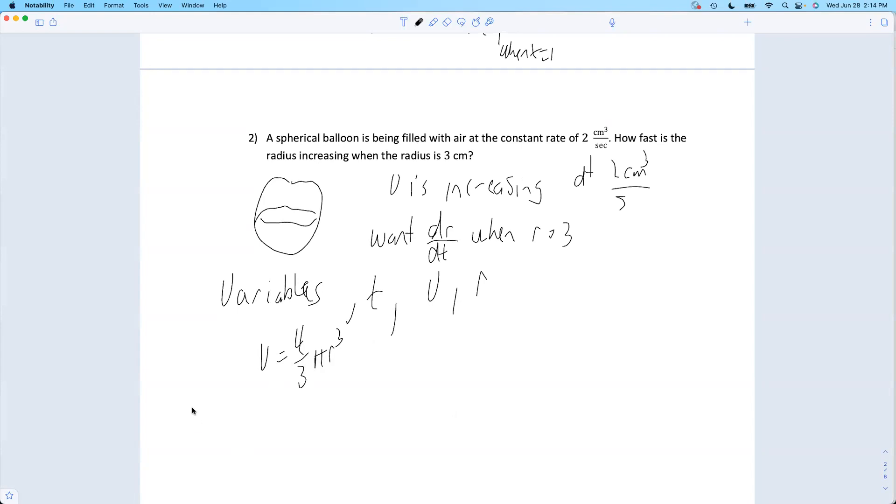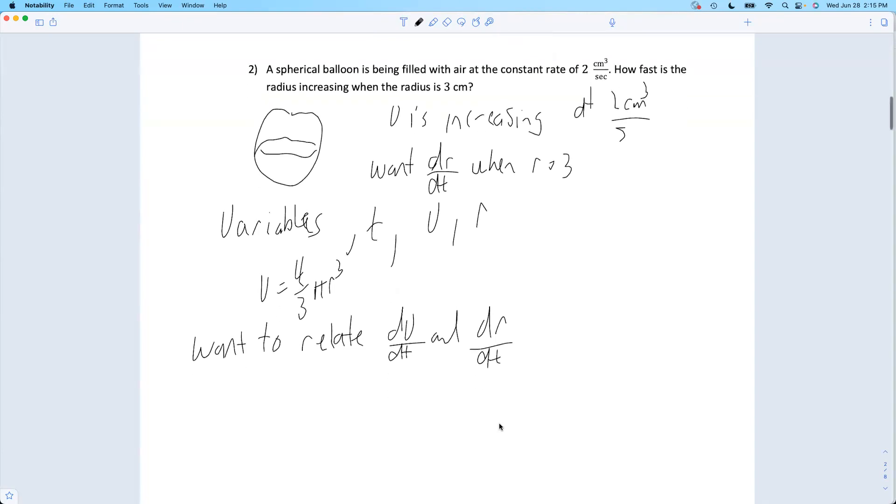Okay, now what I want to do, I want to relate, that's why these are called related rates, dv/dt and dr/dt. I want some relationship between those. And how do I get that? It's the same every time. Take the derivative with respect to time of both sides.